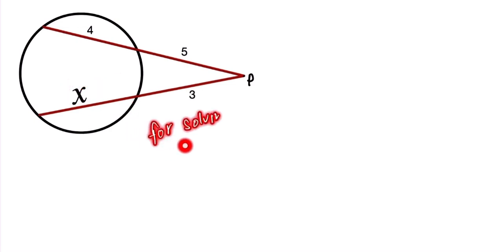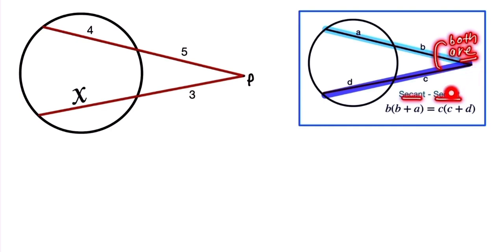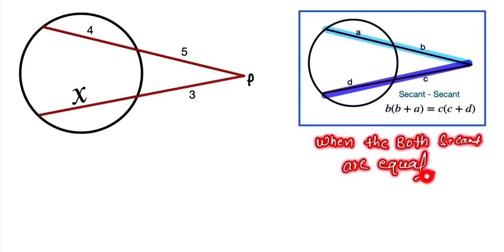So here we have to find the value of x. We're going to use a circle theorem called the secant-secant theorem, this one. So here, this one and this one, both are secants. So according to this theorem, when both secants are equal, when both lengths are equal...